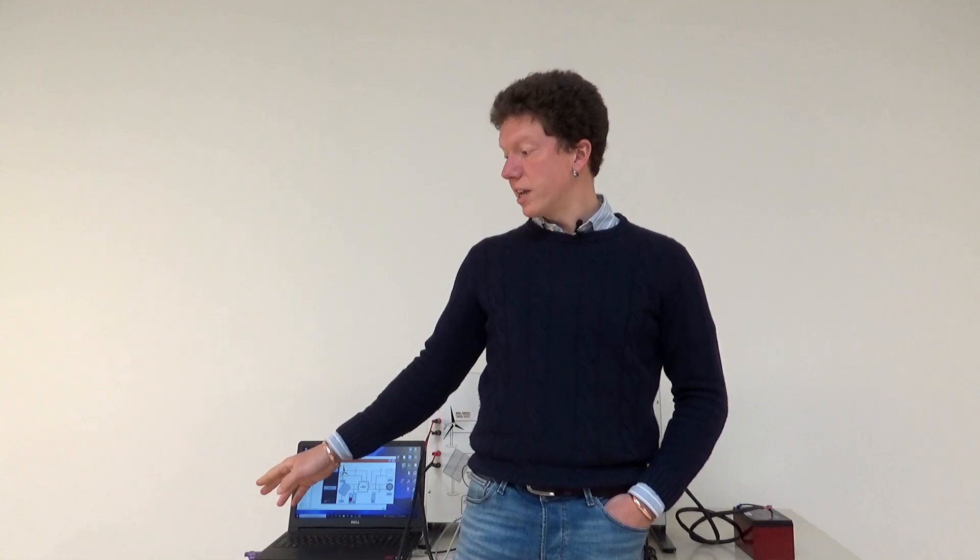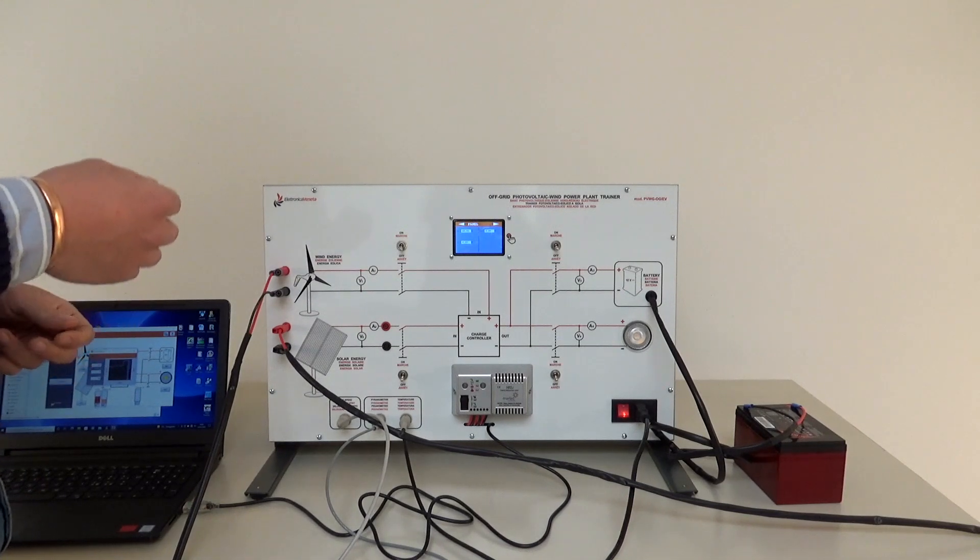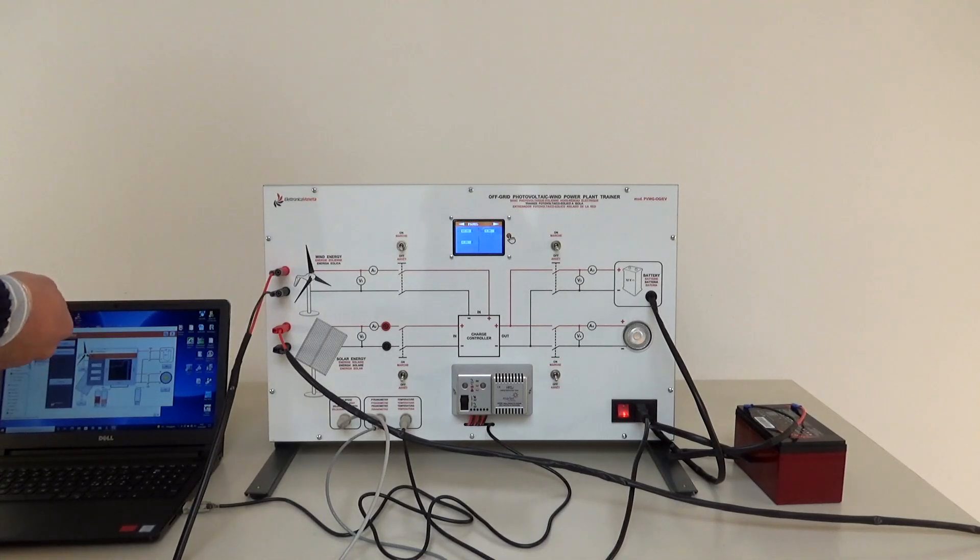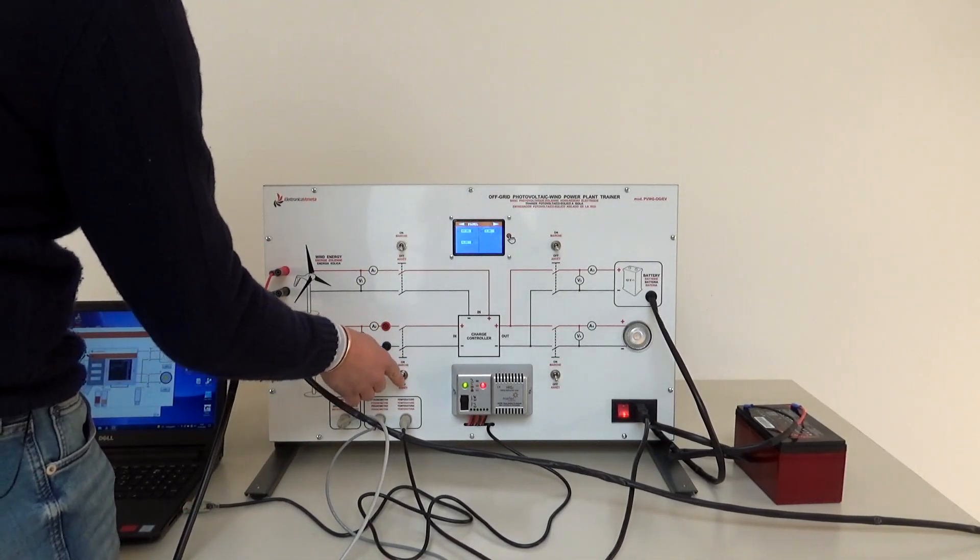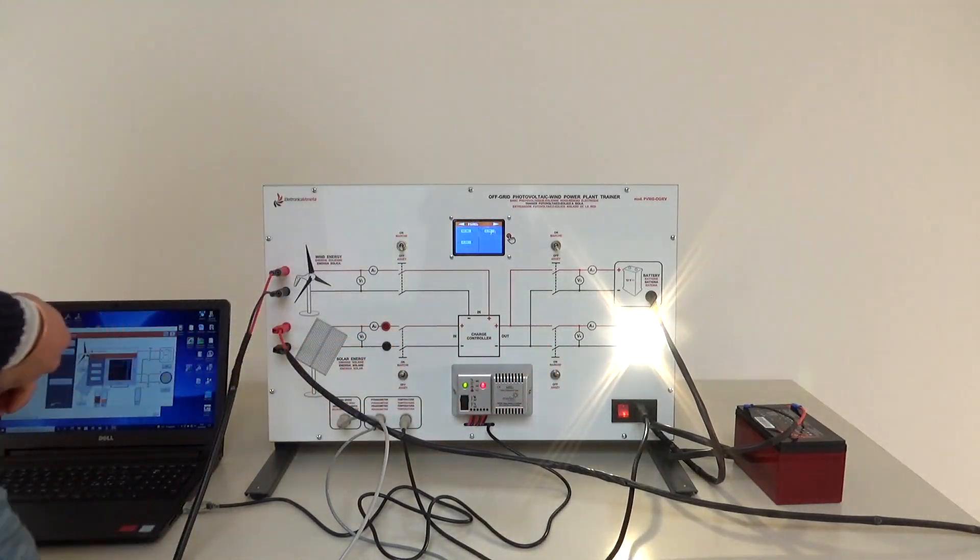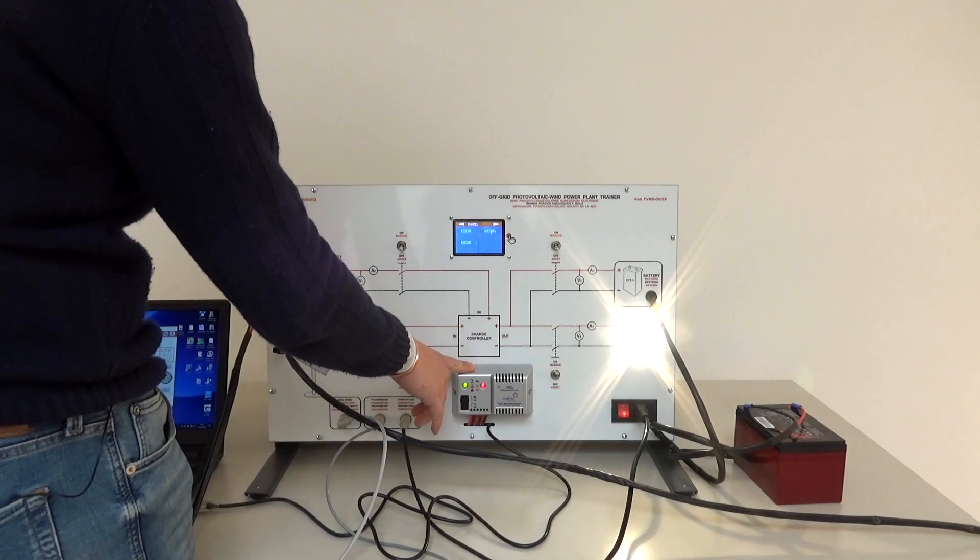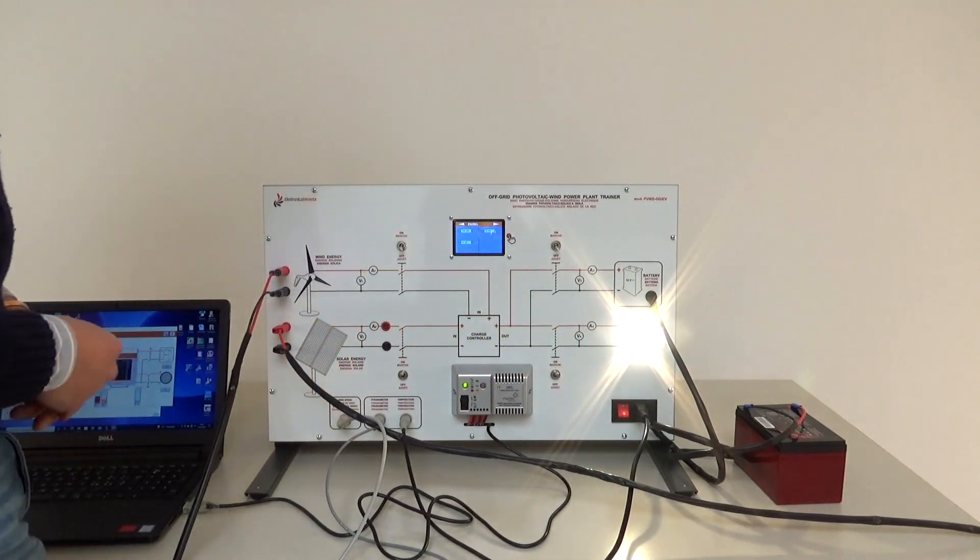Since the trainer is intended for indoor use, now we turn on the optional module SS1 and the wind generator WGIE to simulate respectively the sun and the wind energy. Once connected to the mains, the SS1 lamps start powering up the system via photovoltaic panel. We can insert the photovoltaic panel enabling its switch and for example inserting an electrical load. In this way we see all the energy produced by the photovoltaic panel going into the charge controller and flowing outside to the electrical charge.